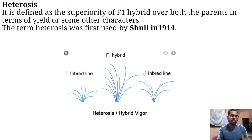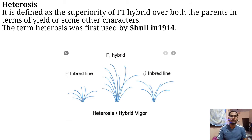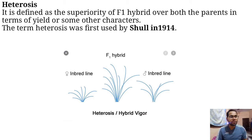The meaning of Heterosis is the superiority of the F1 hybrid over both parents in terms of yield or other sub-characters. This term was given by Shull in 1914 in maize.